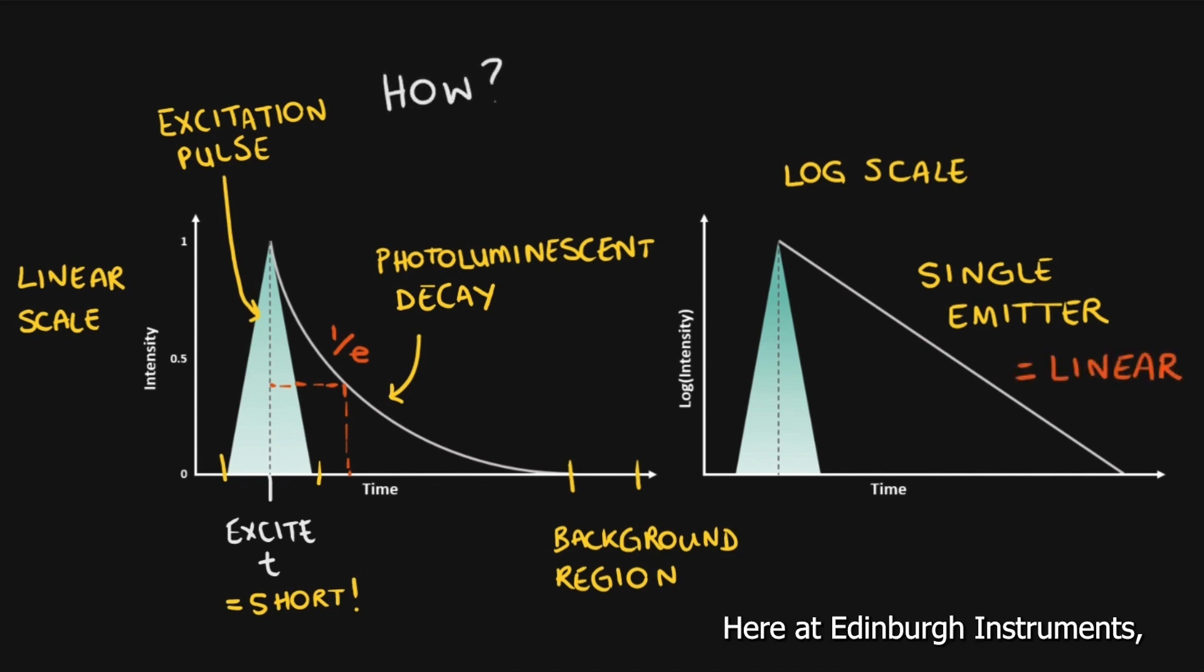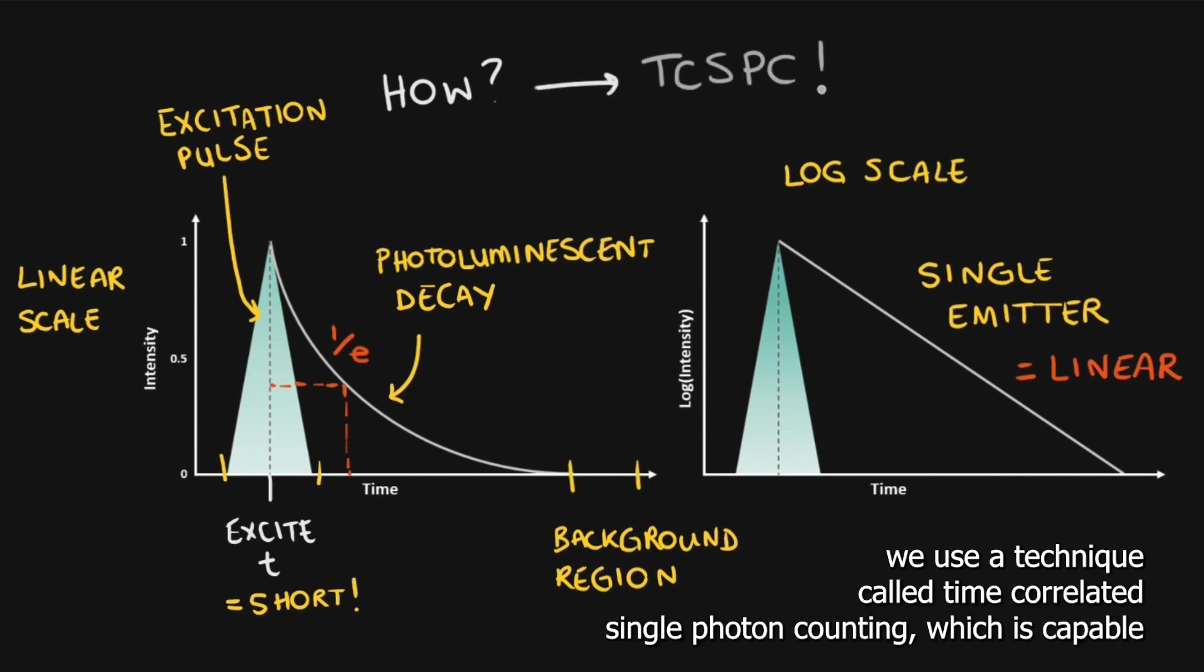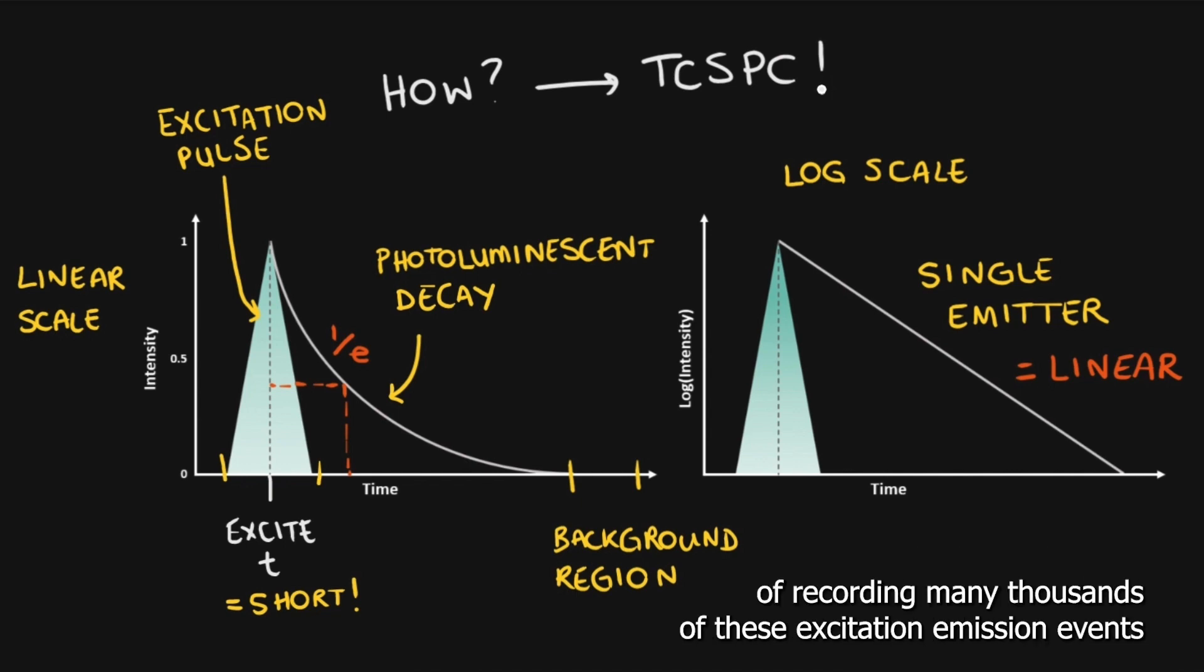Here at Edinburgh Instruments, we use a technique called time-correlated single photon counting, which is capable of recording many thousands of these excitation emission events to create decay curves like these examples we've seen.